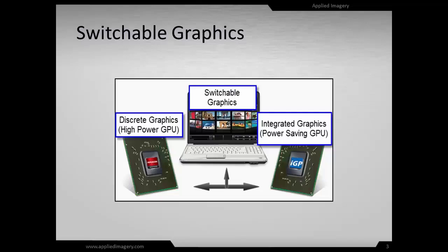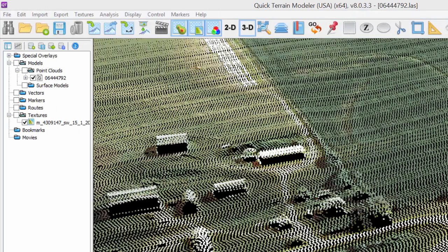Many laptops are configured with switchable graphics, meaning the laptop includes two GPUs: an Intel integrated GPU as well as an NVIDIA or ATI discrete GPU. The laptop default setting is likely to use the integrated GPU because it consumes less power. Switchable graphics work fine with QtModeler, but users need to ensure that QtModeler uses the discrete graphics processor, often referred to as the high-performance GPU in laptop configuration settings.